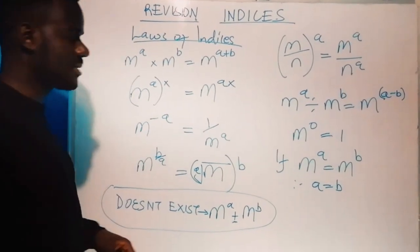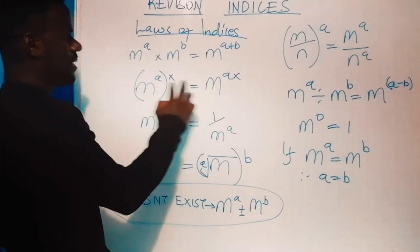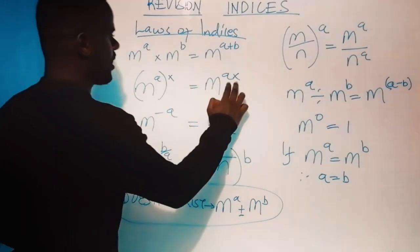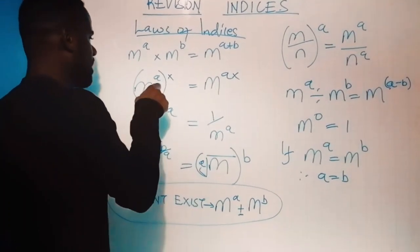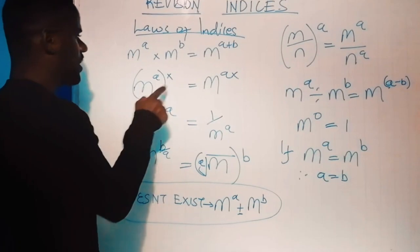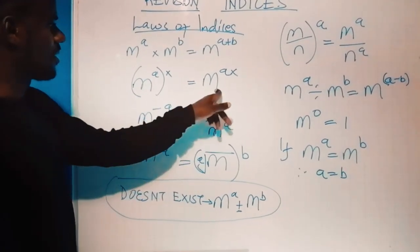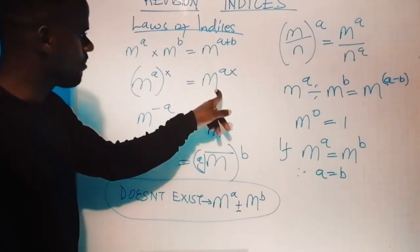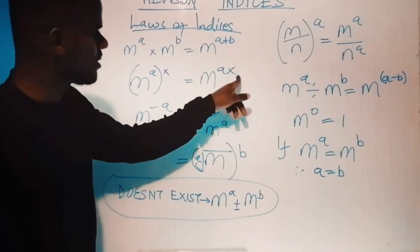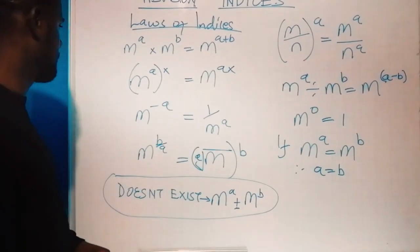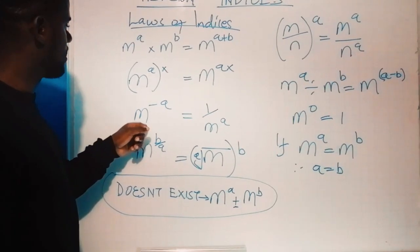The second law: if you have m raised to power a, and then in brackets there is another power, the powers multiply each other. So m raised to power a, in bracket raised to power x, is the same as m raised to power a times x.